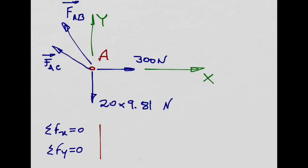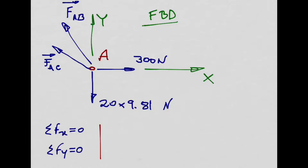We have particle A with coordinate system x, y in two dimensions. This is the free-body diagram of particle A. Now we add all these vectors together, starting with the 300 Newtons force. This force only has a component in the horizontal x-direction, so I write it as (300, 0). The second vector is the weight, which has a component in the y-direction only, and it's negative since it's opposite to the y-axis: (0, −20×9.81).